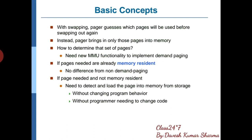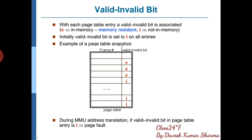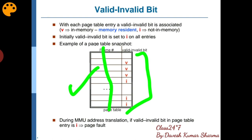यह करते समय ध्यान रखेगा — it must be done without changing the program behavior। Program behavior change नहीं होना चाहिए और programmer को tension नहीं होनी चाहिए कि उसको अपना program code change करना है। अब देखो valid और invalid — जैसे कि हम लोगों ने पिछले lecture में virtual memory में देखा था — valid invalid क्या था। Suppose अगर किसी page की page table में page number है, यहाँ पर frame लिखा हुआ है और यह protection bits हैं, sharing bits हो सकते हैं।